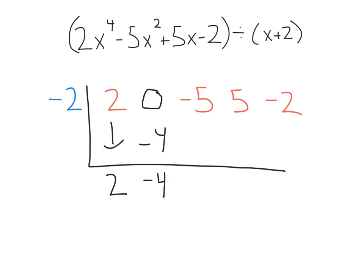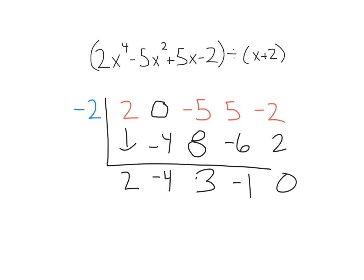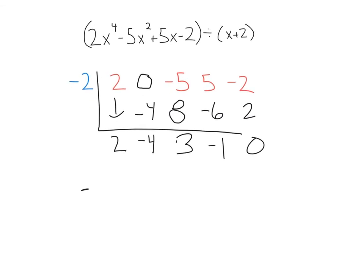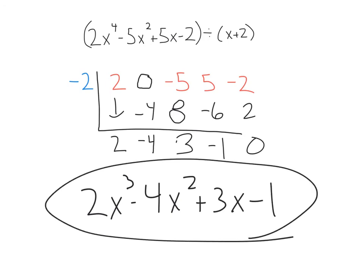So continuing: two times negative two is negative four; add those to get negative four; negative two times negative four is positive eight; negative five plus eight is three; three times negative two is negative six; add those to get negative one; negative two times negative one is positive two, and we get a remainder of zero. Our final answer is two x cubed minus four x squared plus three x minus one. Whenever you skip a degree or do not have a degree represented, you need to put a coefficient of zero as a placeholder in your synthetic division.